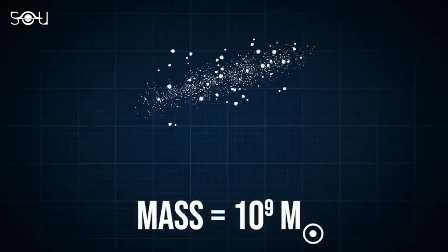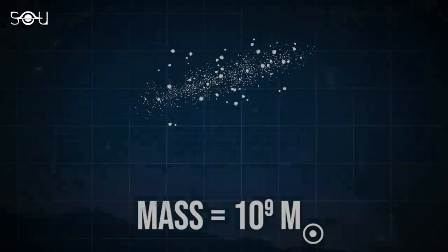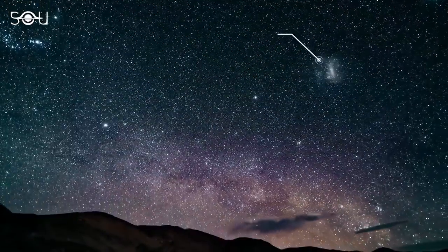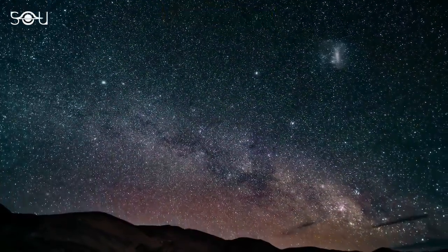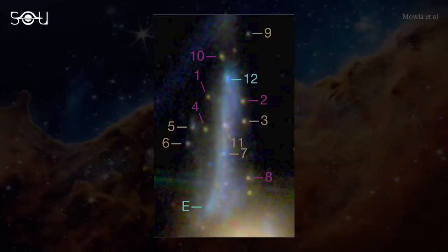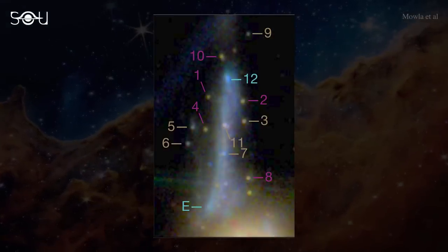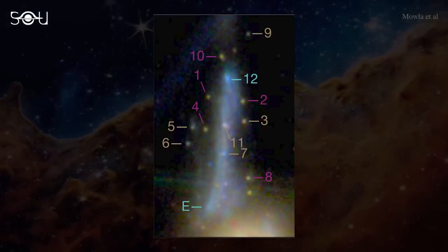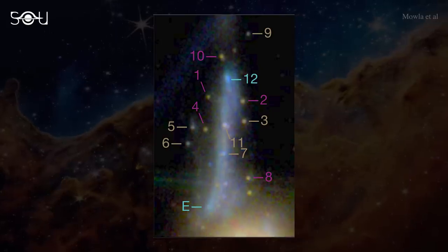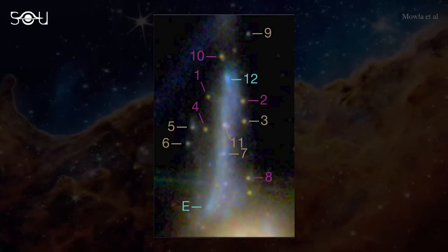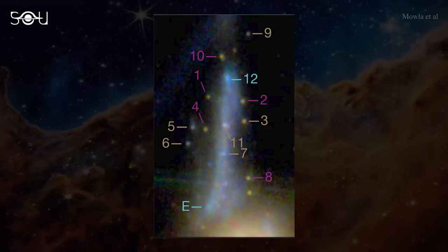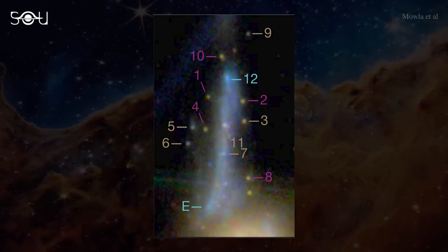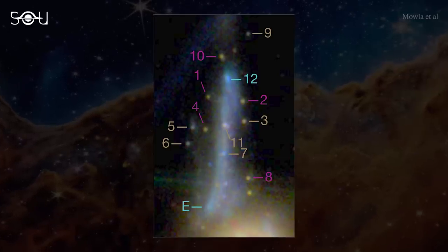The Sparkler galaxy itself has a mass of about a billion solar masses, equivalent to the Milky Way's satellite galaxy, the Large Magellanic Cloud. Out of the 12 objects marked 1 through 12, number 9 hasn't been included in the analysis because of a high signal-to-noise ratio issue. Additionally, objects marked 11 and 12 overlap entirely with the bulk of the galaxy, making it extremely difficult to disentangle their light from that of the host galaxy.